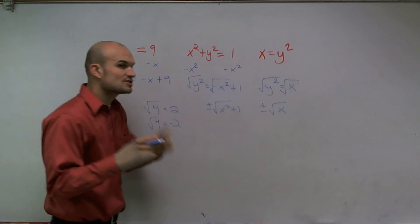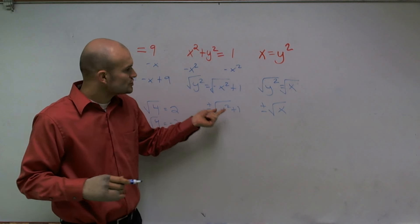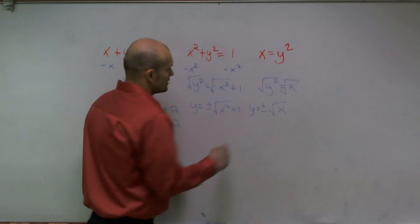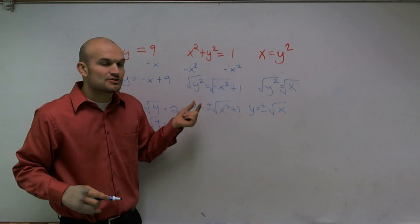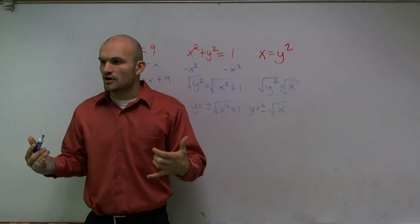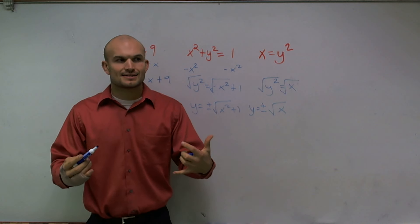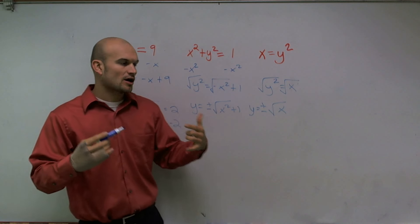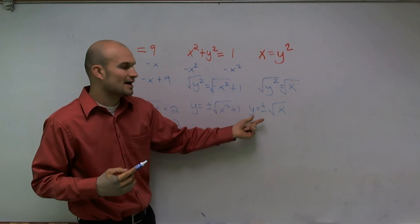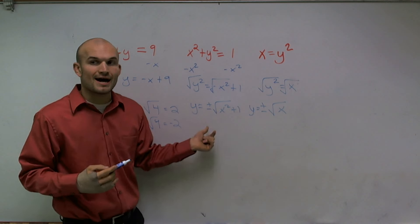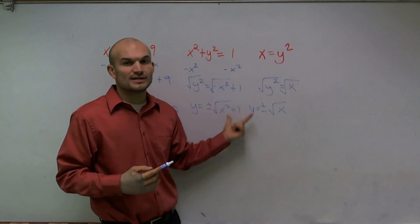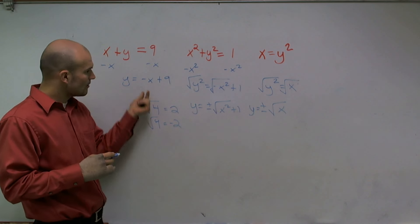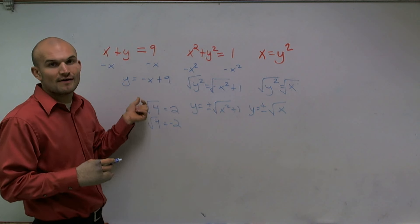Since I have two values for my Y—I have a positive and negative—whenever I have two values, these are not functions. The problem says find the function Y in terms of X that are a function. Well, since I have two values for each X for Y, you could not write these as a function for Y in terms of X. However, every X value in the first equation is going to give me a unique Y value, so therefore that works.